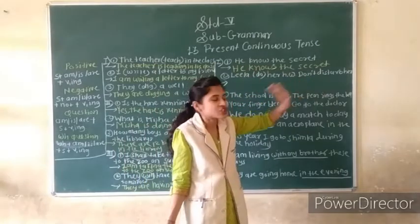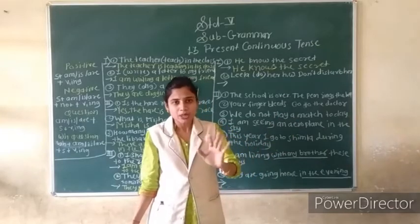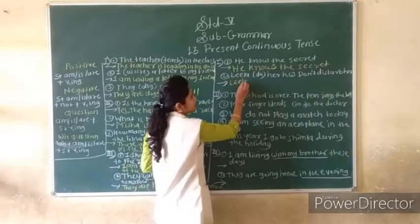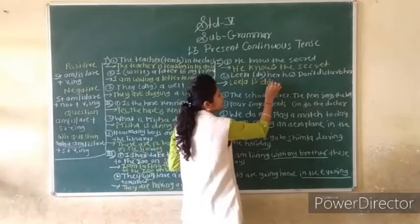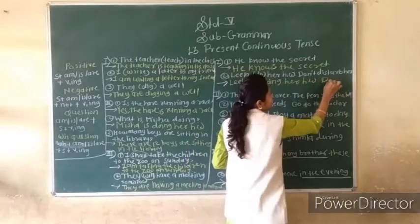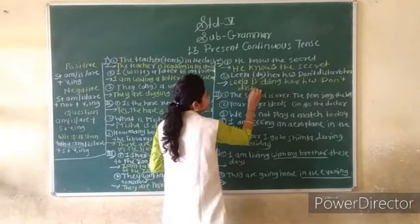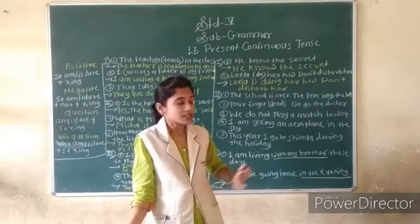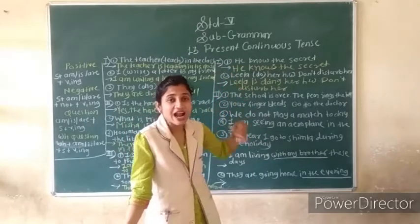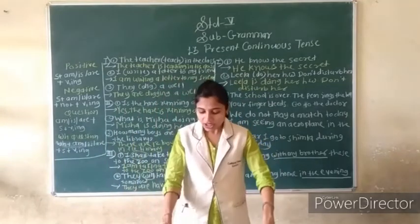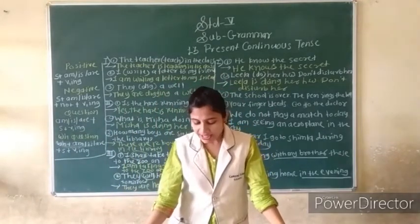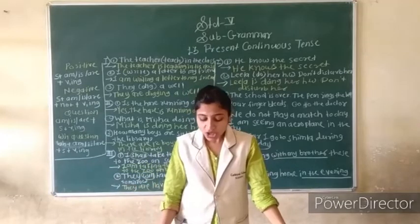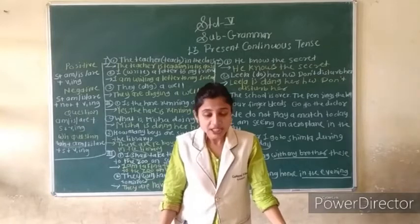Second: Leela do her homework — don't disturb her. The action is ongoing, not permanent. So we use present continuous: Leela is doing her homework. Don't disturb her. Run fast — the train is whistling now. So use present continuous: The train is whistling. Like this you can write it.